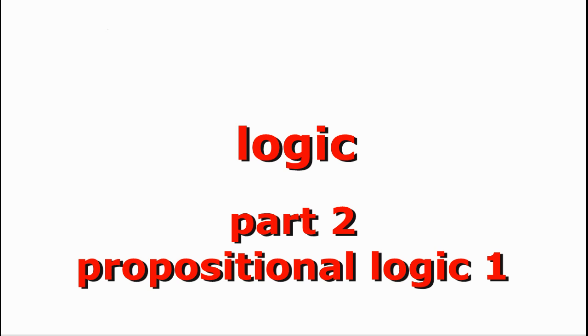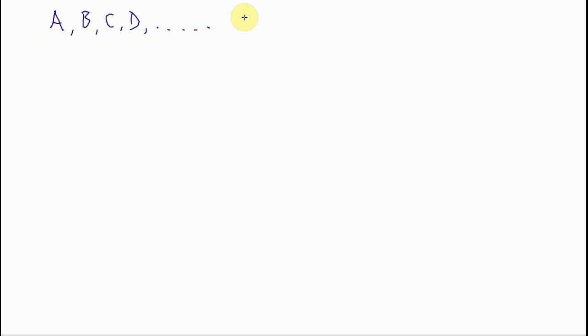Now we come to the study of logic proper. In this part of the course we're going to be dealing with what is called propositional logic, and I'm going to introduce propositional calculus rather formally. First I'll introduce the symbols we will be using. We're going to use the capital letters of the English alphabet — A, B, C, D, and so on. If the 26 letters aren't sufficient, we can augment them with subscripts: A1, A2, and so forth. So we will have at our disposal an infinite number of these uppercase letters.